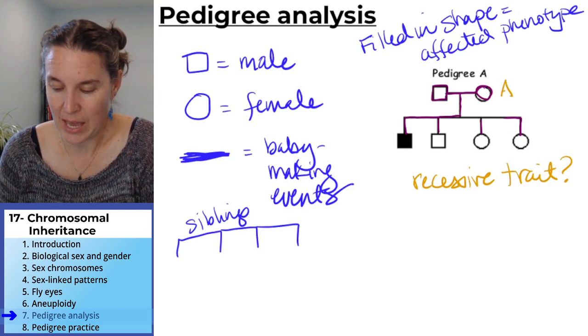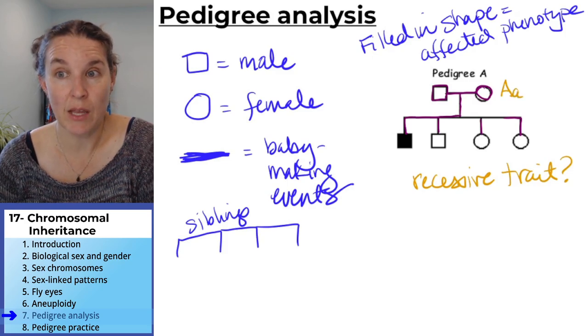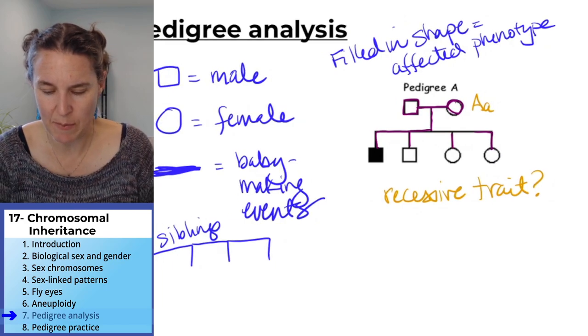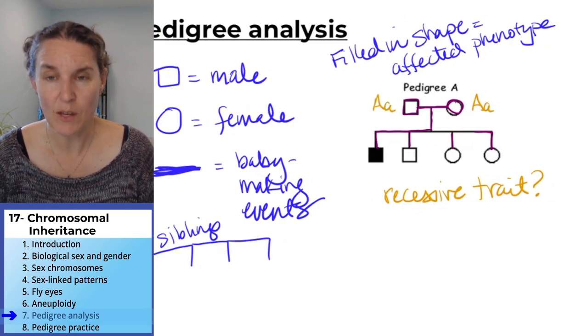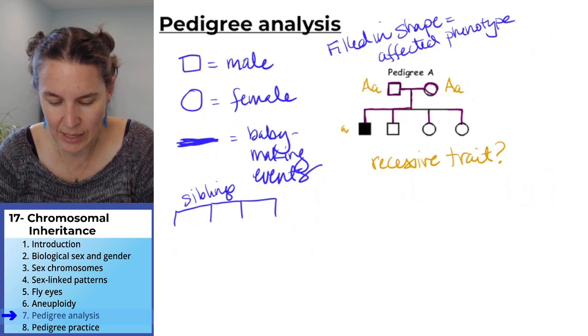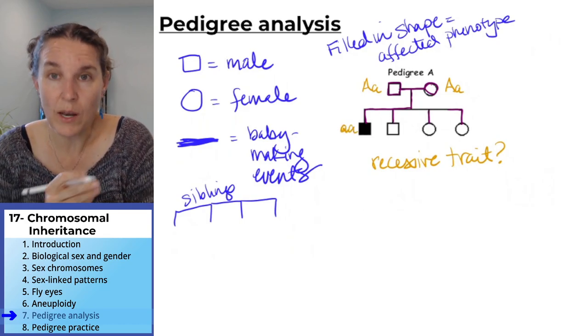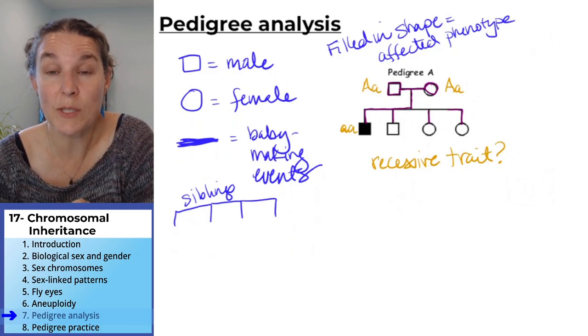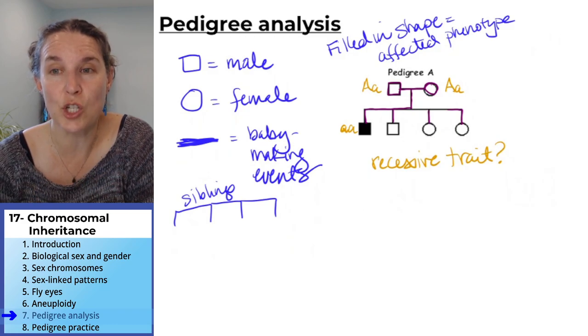And I'll just make up a letter. I'm going to do big A, little a. And I'm going to say, let's see if this works, that we could say big A, little a for both parents. And then that would mean that the kid would have little a, little a, recessive, homozygous recessive, and that would show up.